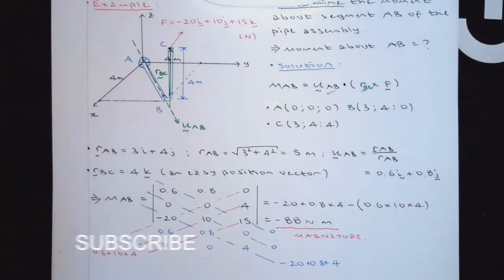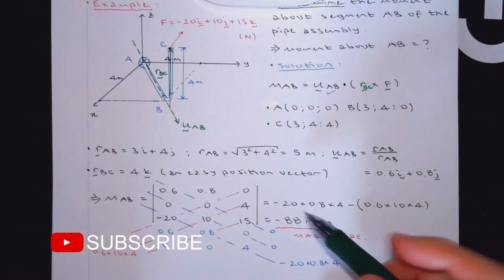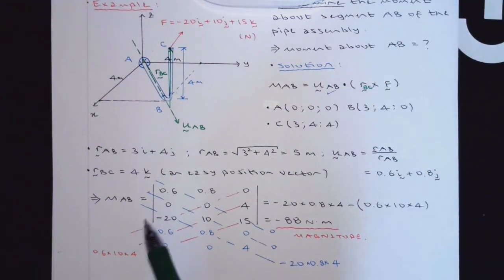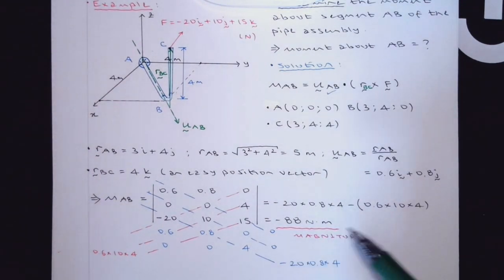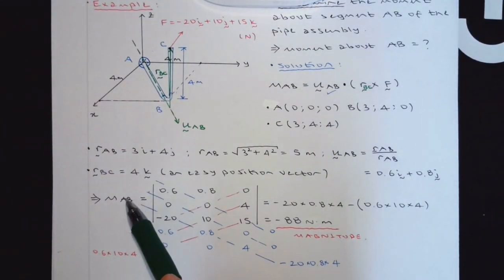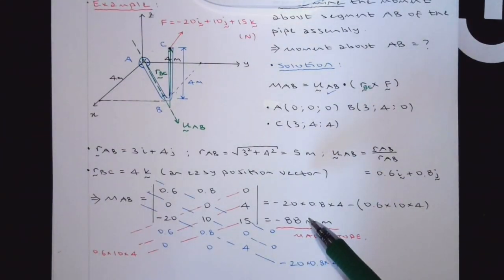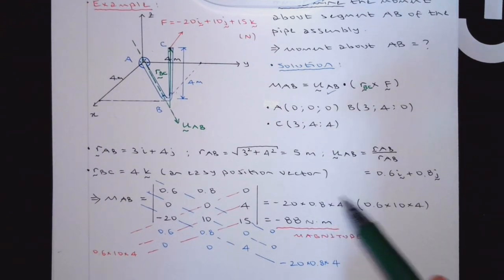What does this minus mean? Minus means that moment vector is actually from B to A. We did everything from A to B. The result came out as negative. This is like assuming support reactions, right? You assume a direction. And if you find it to be negative, it's in the opposite direction. So here, what we are given is AB, but the moment vector is really from B to A.